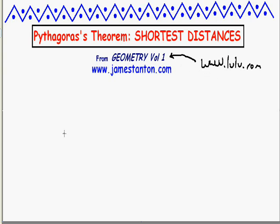What do I mean by that? I'm assuming we know basic Pythagoras' Theorem, and the first question I ask my students is the following. Here's a line — I assume it's straight — and here's a point P not on my line. The question is: I'm standing at P, and I want to walk to the line. I don't care where I end up, but I want to know what's the shortest path from P to any point on that line.